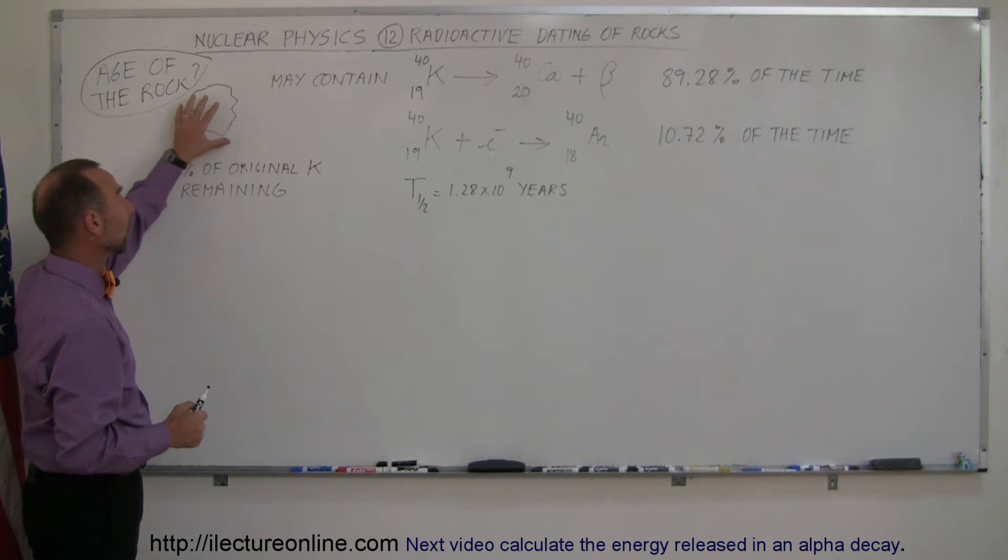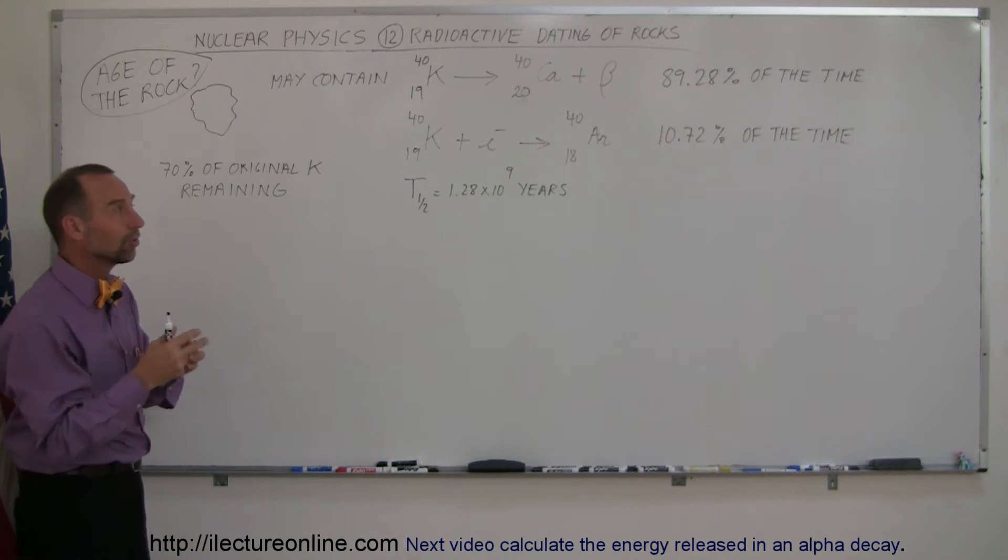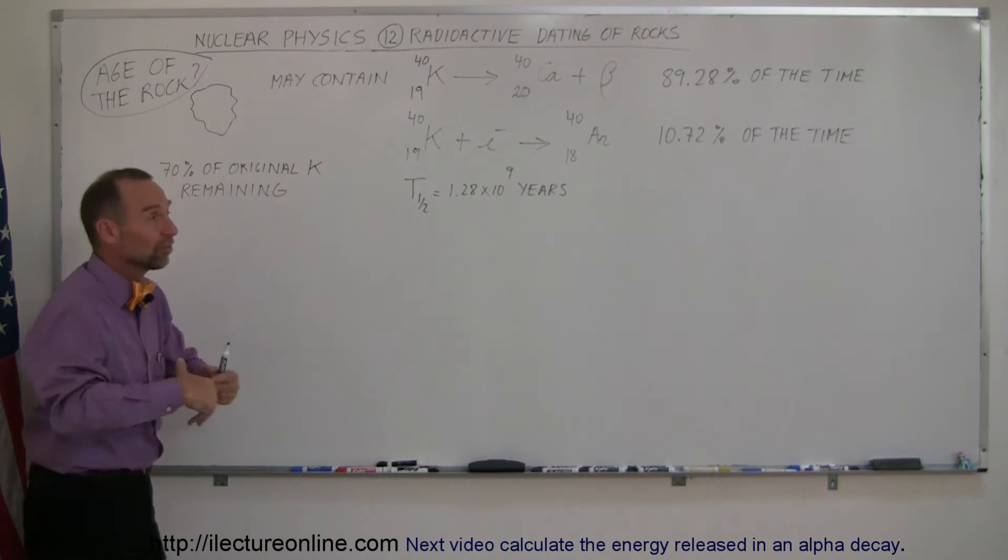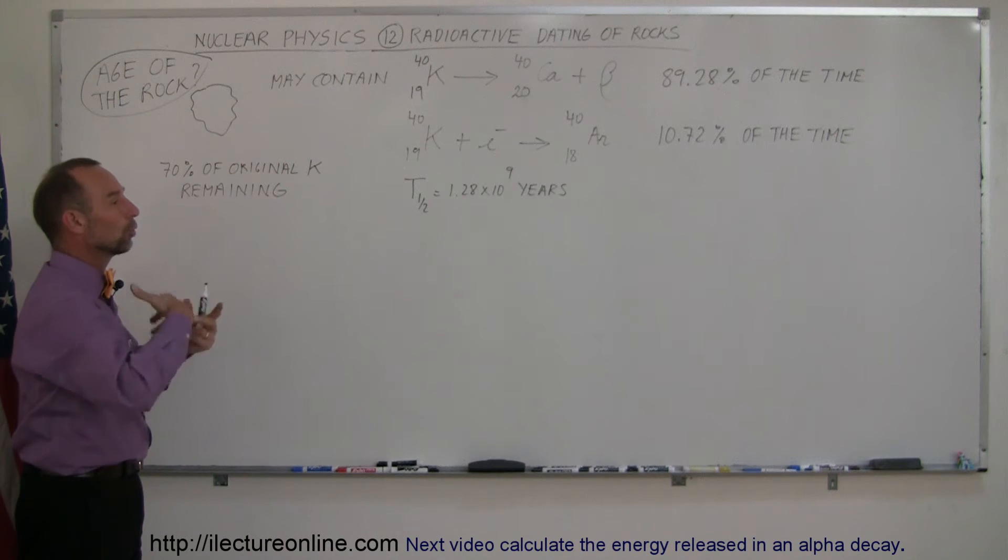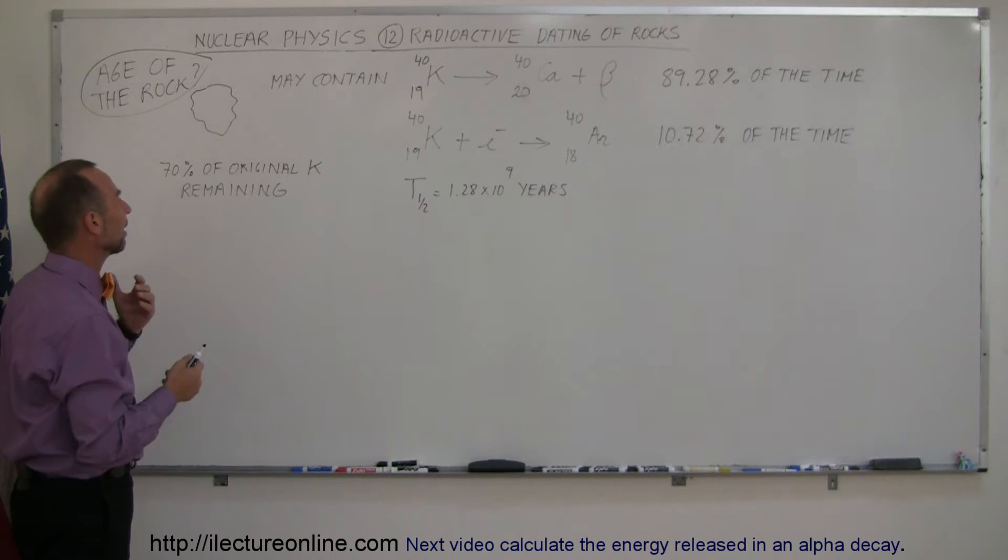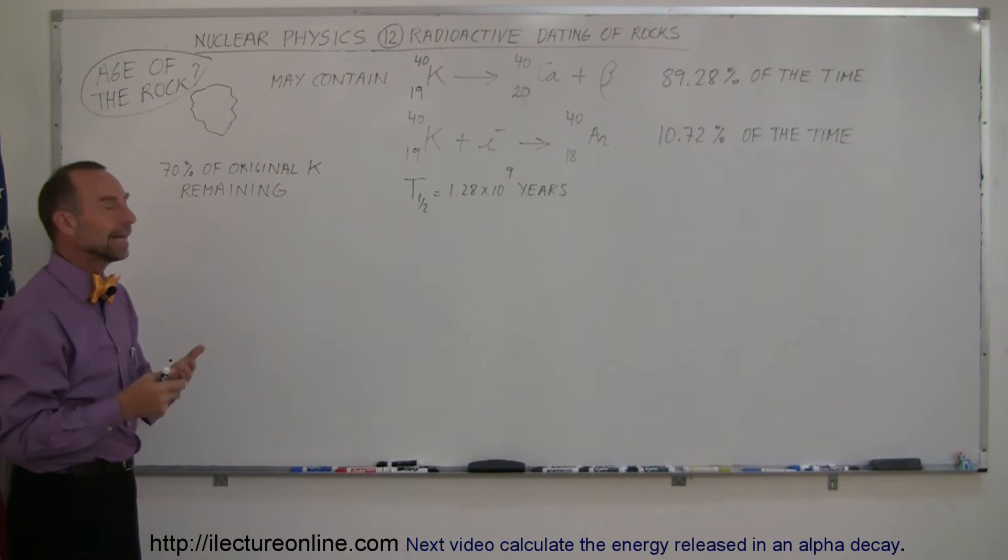And the way that works is when the rock is first formed from a molten state, the argon gas cannot have been present because it's a gas that will gas out during the process of it being molten. And so when the rock hardens, it is then assumed not to have any argon in it.